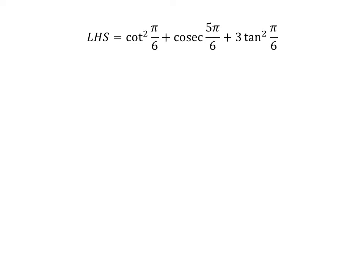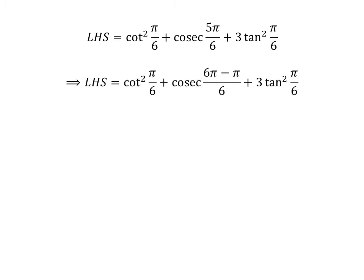The left-hand side of the equation to be proved is cot²(π/6) + csc(5π/6) + 3tan²(π/6). Since 6 minus 1 is equal to 5, the left-hand side can be written as cot²(π/6) + csc(6π/6 - π/6) + 3tan²(π/6).